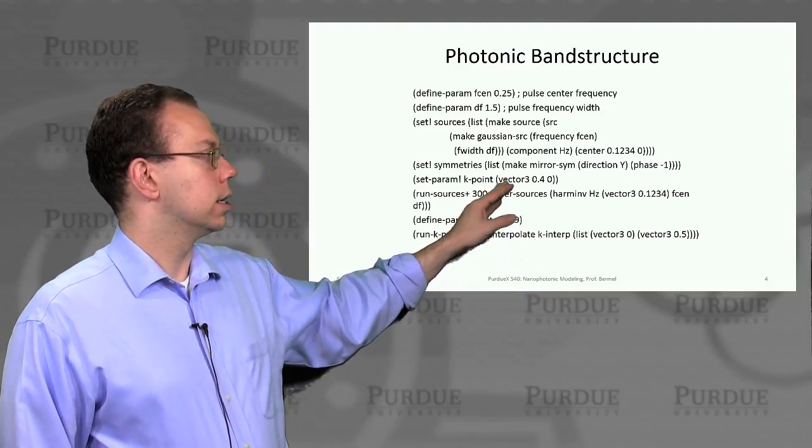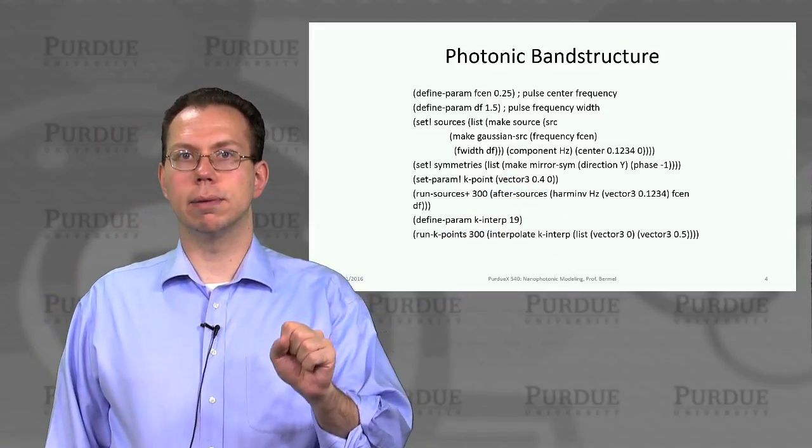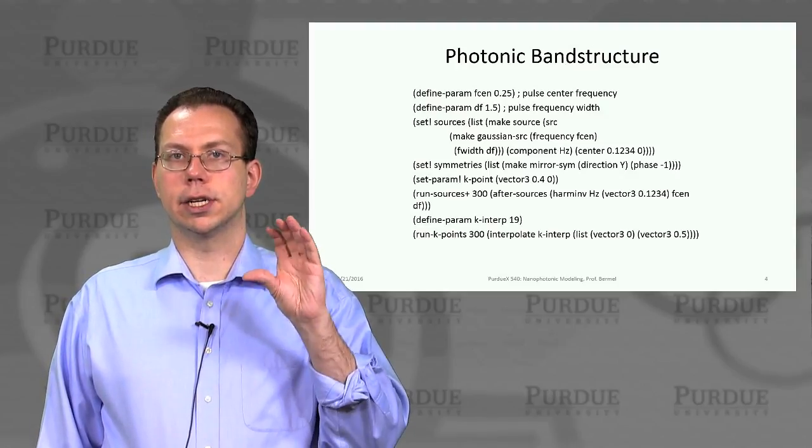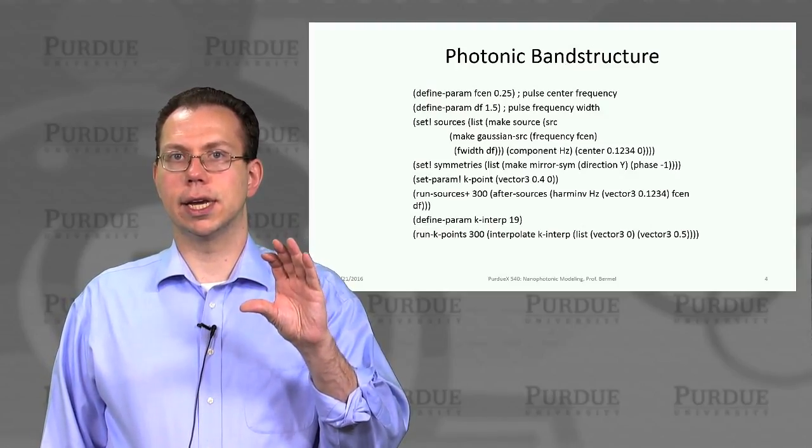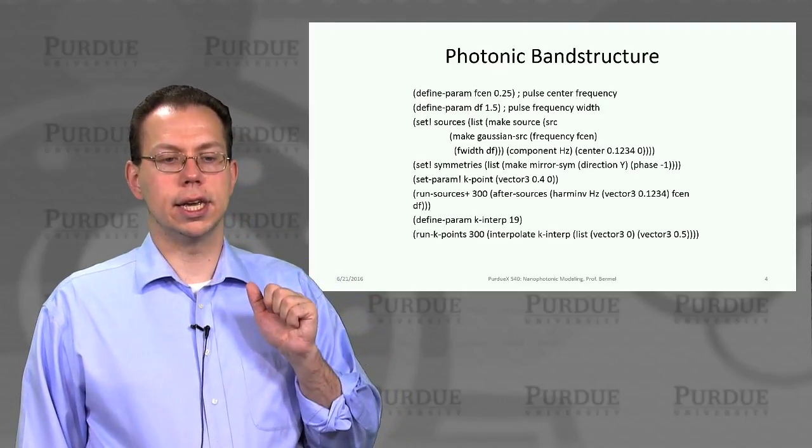And then we can actually impose a k vector. So this k vector can only be imposed really in the periodic directions. So in the aperiodic direction, the y direction, we basically assign a ky of zero, because there's really no point in assigning any k value.